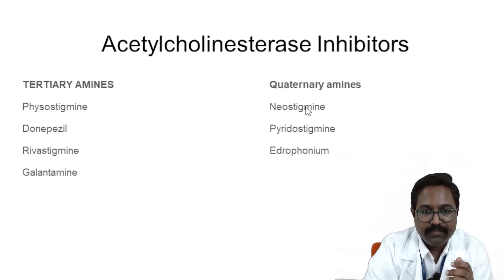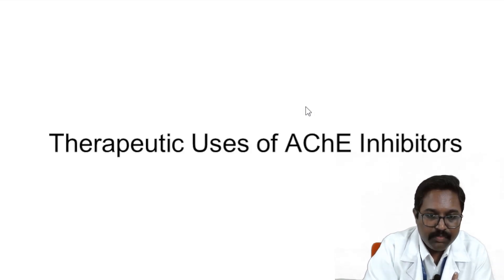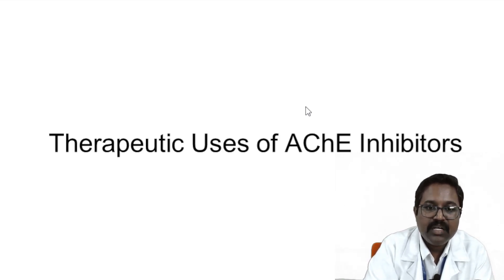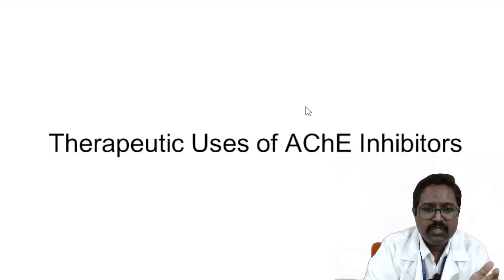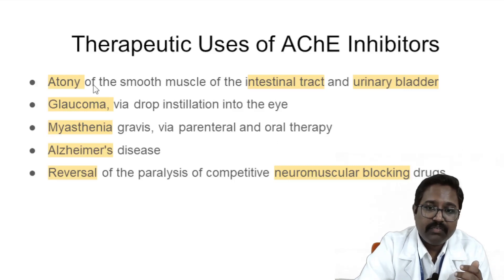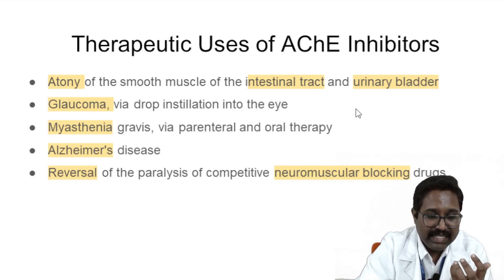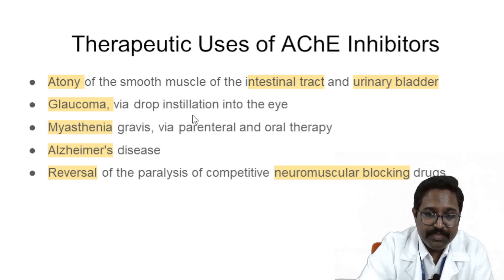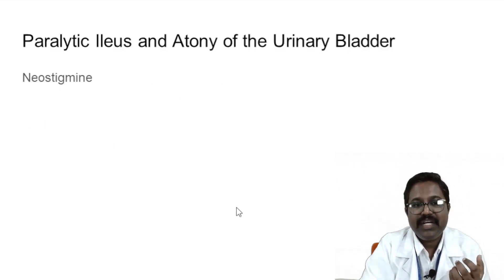The pharmacological actions of acetylcholinesterase inhibitors are similar to those of acetylcholine or directly acting cholinergic drugs. Therapeutic uses include: treatment of atonia of smooth muscles of the intestinal tract — such as paralytic ileus or atonic bladder; glaucoma (using eye drops); myasthenia gravis; Alzheimer's disease; and reversal of paralysis caused by competitive neuromuscular blocking drugs.